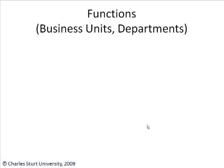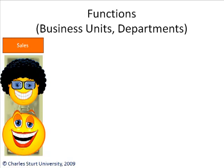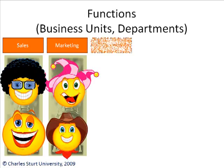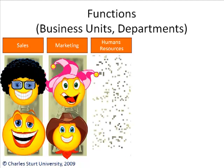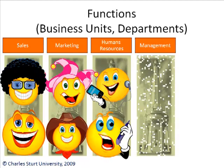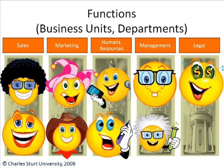Let's look at some functions then. Functions are also known as business units, and some organizations refer to them as departments. Here are some examples: sales - most companies have a sales area; marketing; human resources for recruiting people; and management for managing the organization. And here's another one: legal, looking after all the legal stuff.